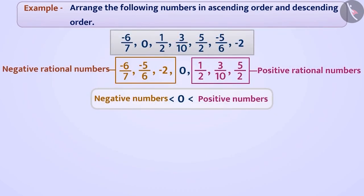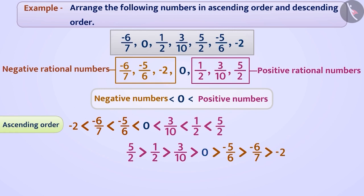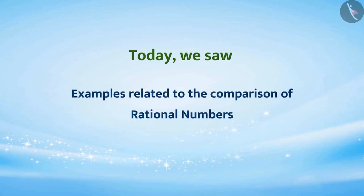Since negative rational numbers are smaller than 0 and 0 is smaller than positive rational numbers, to find the ascending order of all numbers, we keep 0 in between and arrange the ascending order of all the negative rational numbers towards the left and the positive rational numbers towards the right. If we reverse the order, all the numbers get arranged from greater to smaller — that gives us the descending order. Today we saw examples related to the comparison of rational numbers. In the next video, we will see the misconceptions related to the topic and method of doing comparisons.